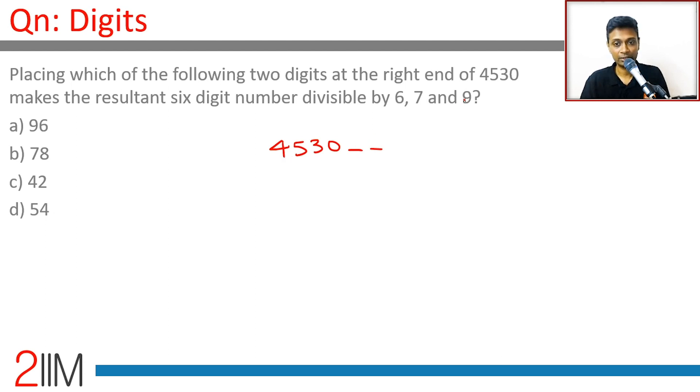This number has to be a multiple of 9 and by 6, or should be a multiple of 18, right? Should be a multiple of 9, should be an even number. So 4 plus 5 plus 3, if you add these digits, 4 plus 5 is 9, 9 plus 3 is 12, digits add up to 12.